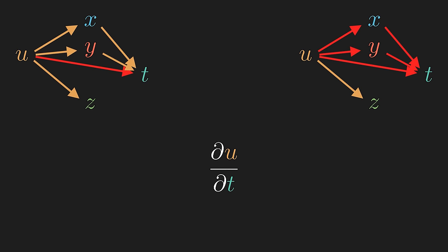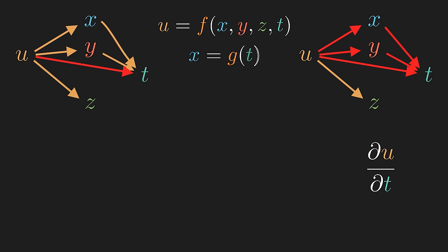If we think of u as a dependent variable, then the partial derivative is the rate of change of u with respect to t with every dependence leading to t. Now u is directly dependent on four variables, so it is a function of x, y, z, and t. And similarly, x is a function of t, and y is a function of t.